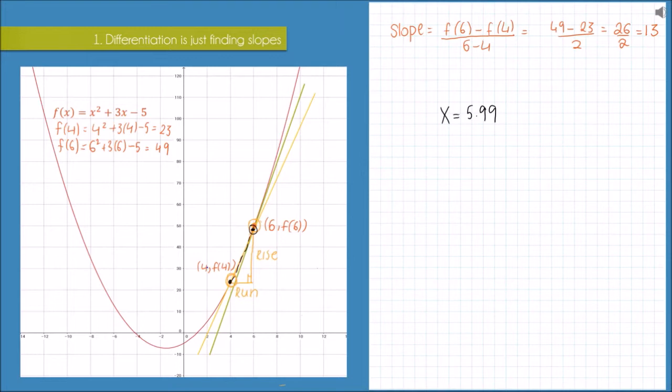I'm just going to calculate quickly what the slope of that secant line would be. So the slope would be equal to f(6) minus f(5.99) all over 6 minus 5.99.